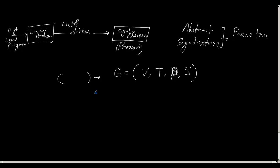The root node of the tree is the starting non-terminal S. All the intermediate nodes of the tree are from the non-terminal set V, and the leaf nodes are the terminals.